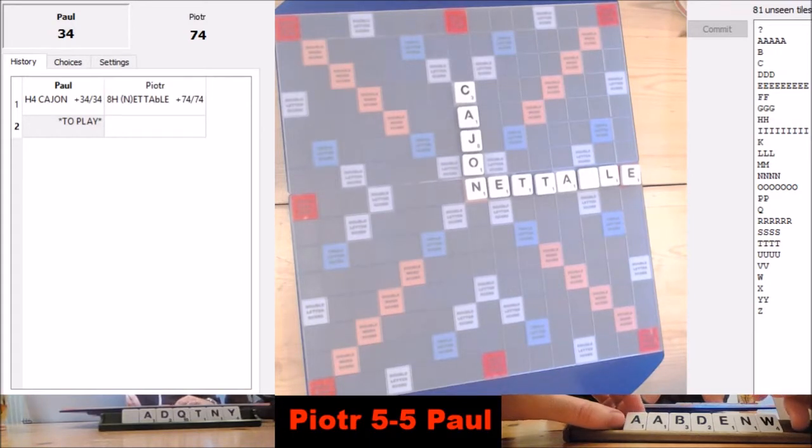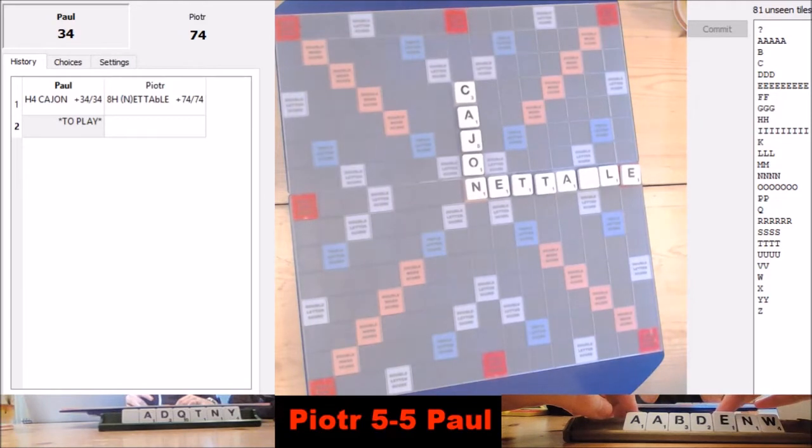Paul's drawn a nice rack apart from the duplicate A's, the B and the W. So he'll be looking to play those off if possible. Immediately, my mind is turning to the J and the area around the J. It looks quite appealing as a scoring spot, and you should always look for the scoring spot, just scan the board for where you can score.